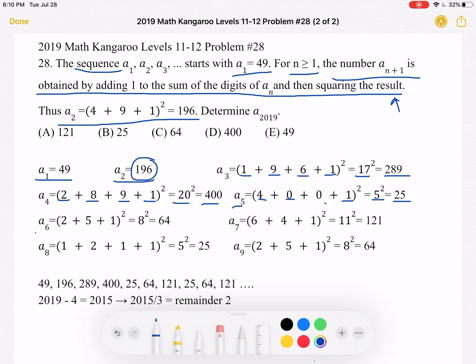Now A6 must be, again, the digits of this added 2 plus 5, and then plus the 1, squaring that 8 squared, which is 64.